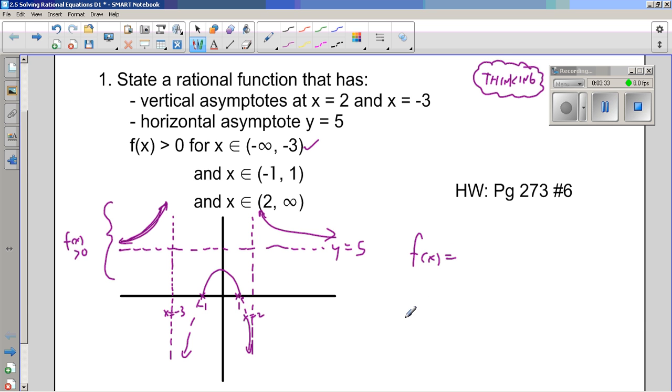Now, let's work backwards from the graph and see if we can figure out an equation. Well, what was the first thing? The first thing was the vertical asymptotes. Vertical asymptotes occur when the bottom is 0. So, I've got x minus 2 and x plus 3 on the bottom. That would give me those vertical asymptotes.